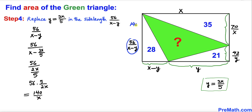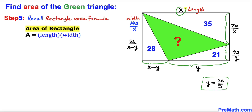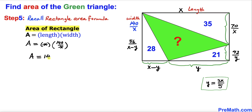Now recalling the rectangle area formula — area equals length times width — in our case the length is x and the width is 140 divided by x. Plugging in: area equals x times 140/x, and the x's cancel, so the area of this rectangle turns out to be 140 square units.